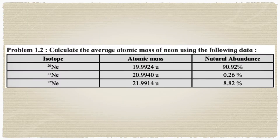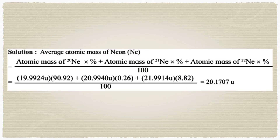Next problem: calculate the average atomic mass of neon using the given data. The isotopes are neon-20, neon-21, and neon-22, with respective atomic masses and natural abundances given. This is similar to the average atomic mass of carbon we did during the theory part. Try to solve it yourself first, then check the solution.